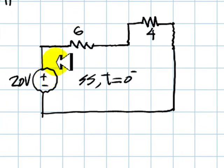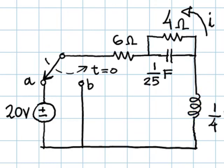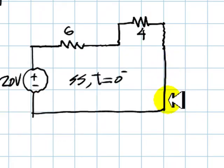It's in DC steady state, so the capacitor is represented by an open circuit and the inductor as a short circuit, as you see here.